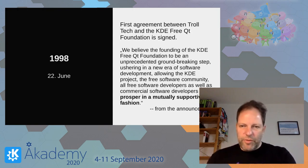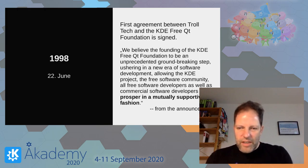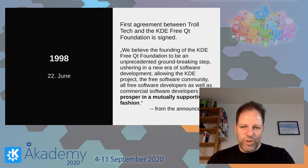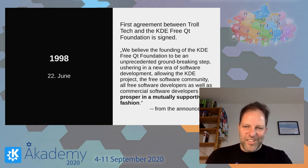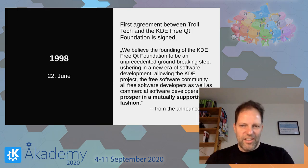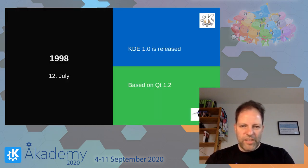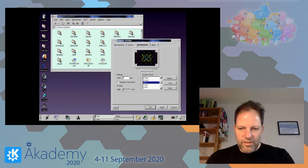Then in June 1998, the agreement was finally signed. There was an announcement with a nice statement: 'We believe the founding of the KDE Free Qt Foundation to be an unprecedented, groundbreaking step, ushering in a new era of software development, allowing the KDE project, the free software community, all free software developers, as well as commercial software developers, to prosper in a mutually supportive fashion.' This is the actual agreement which was signed — three pages. And a few weeks later, KDE 1.0 was released based on Qt 1.2. This is still not a beautiful desktop, but it's a great start and the project gained a lot of momentum.